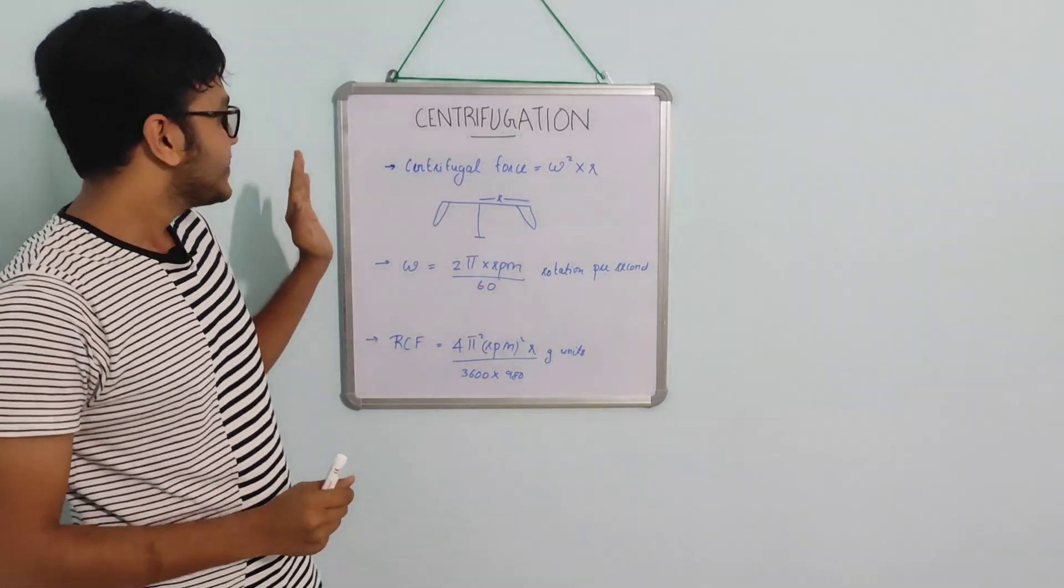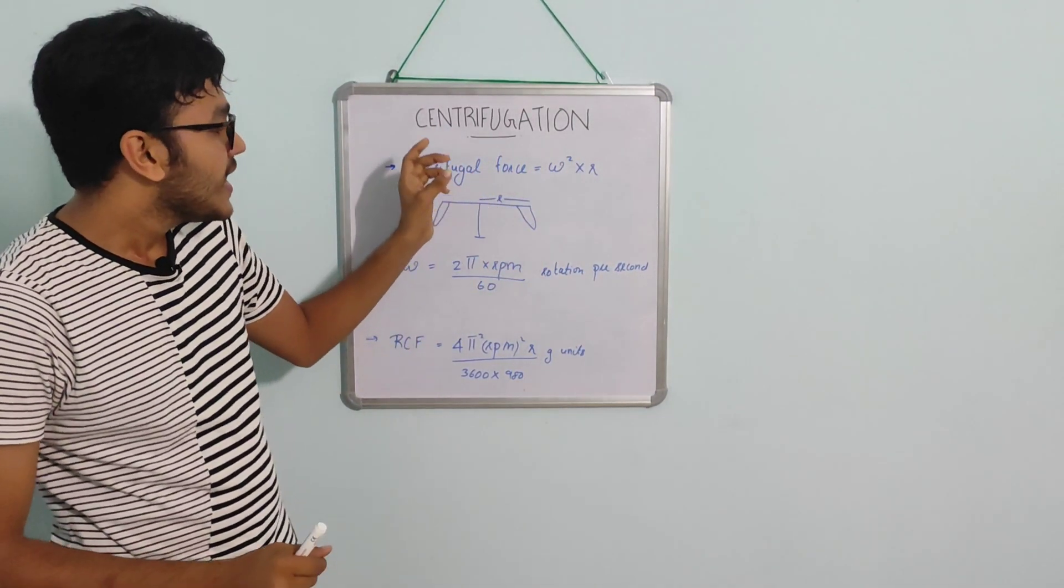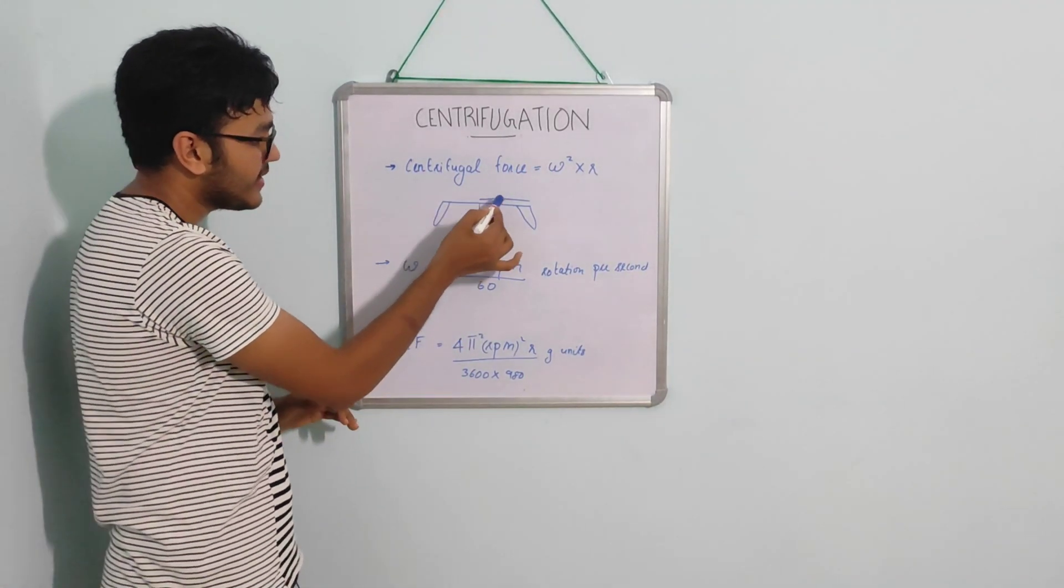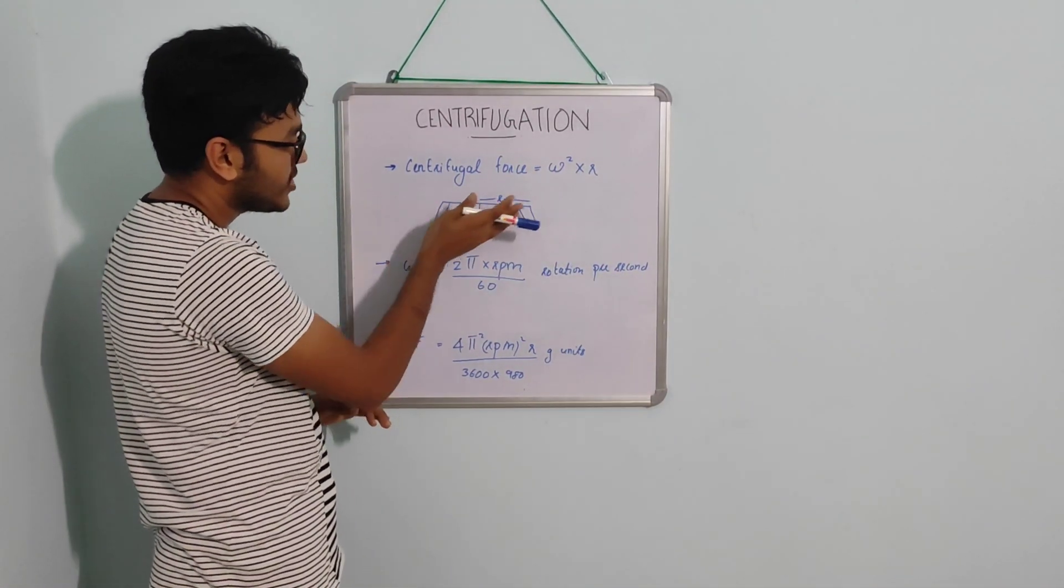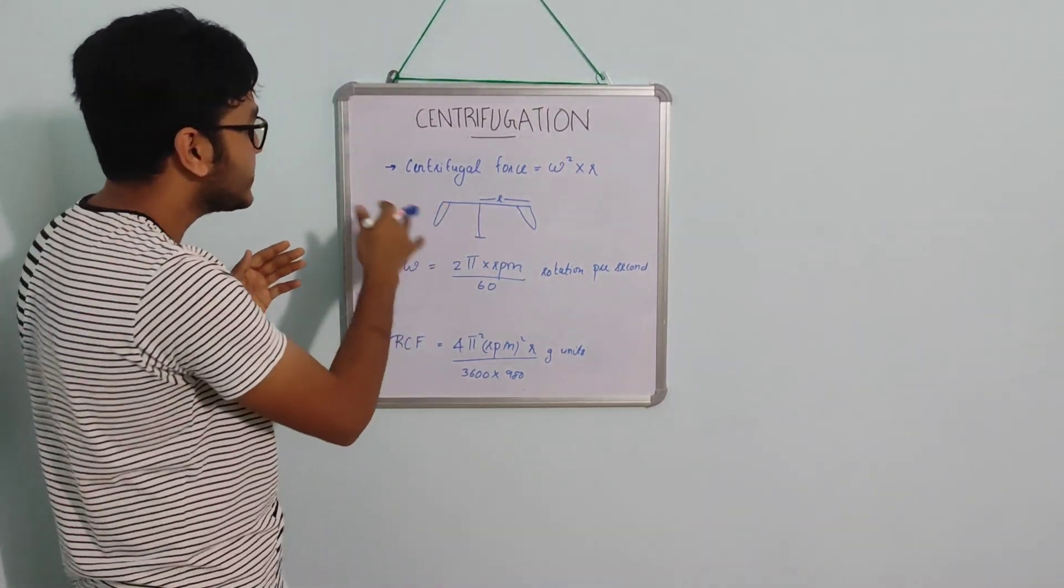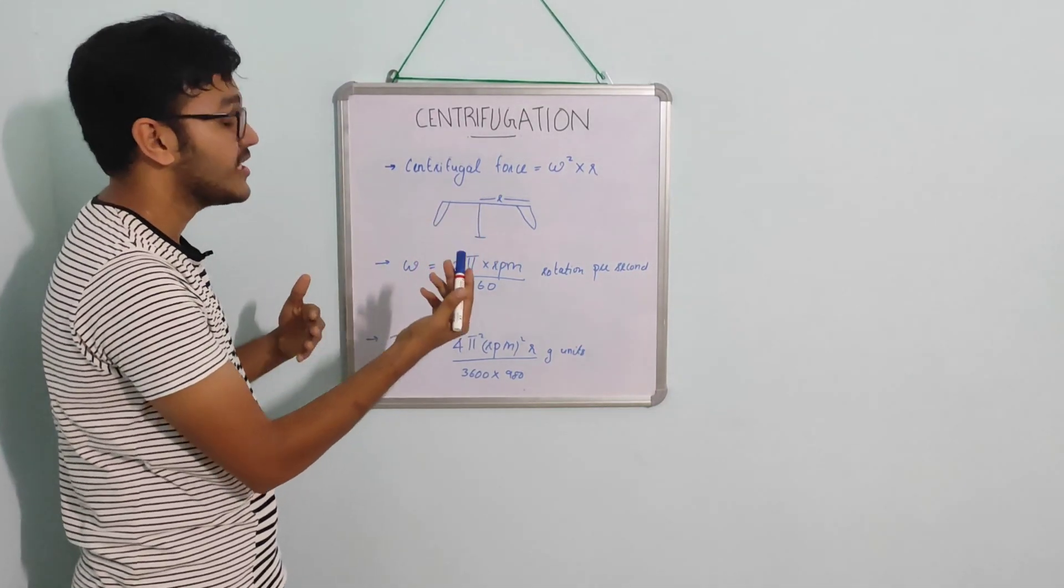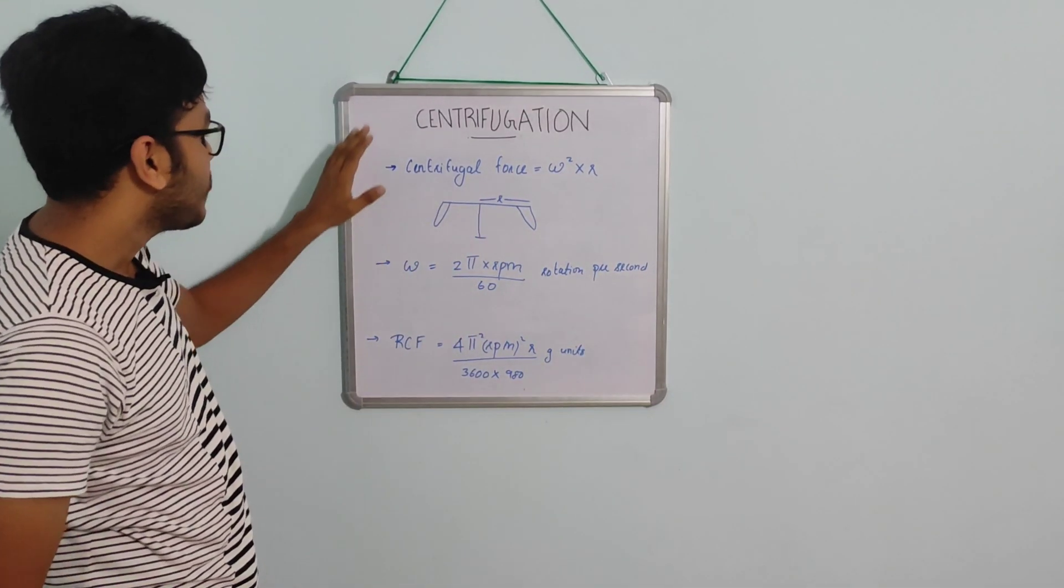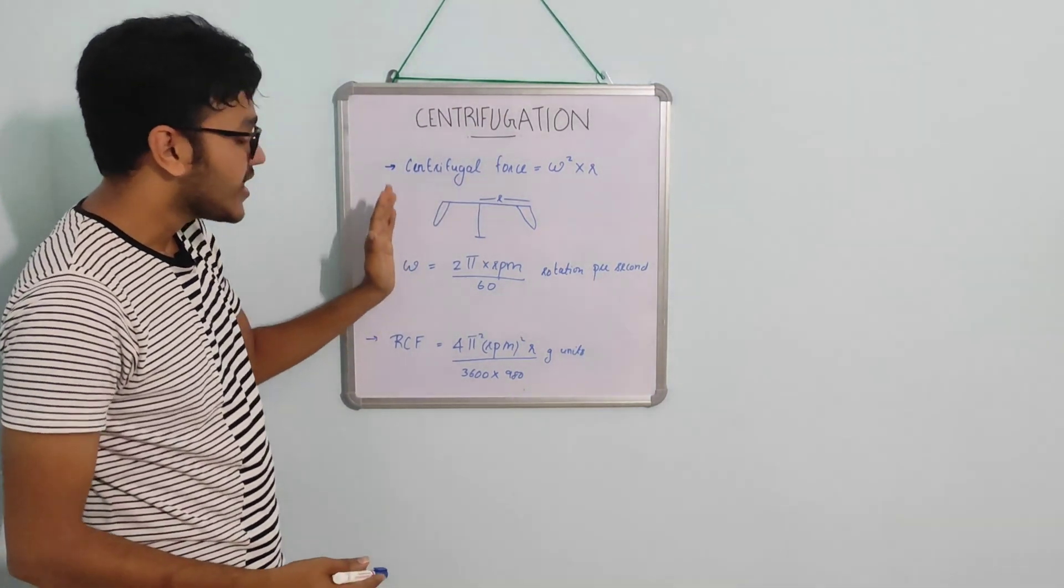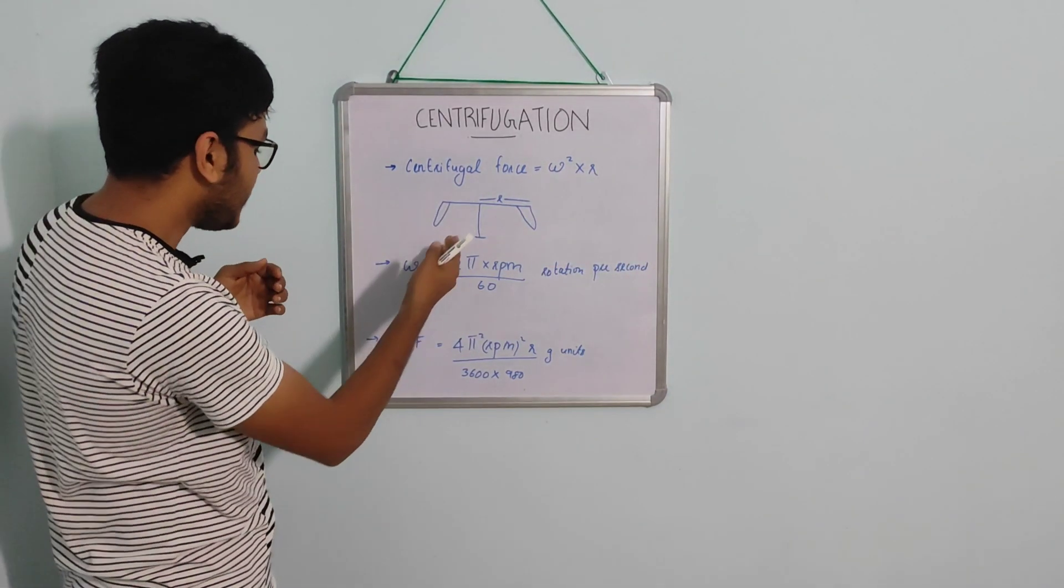The centrifugal force is expressed as omega squared times r. Omega is the angular velocity and r is the radius. The radius is the measurement of the rotor. If radius increases, centrifugal force also increases. If the rotation speed increases, centrifugal force increases by the square. Omega, the angular velocity equation, is 2 pi times RPM divided by 60 for rotations per second.